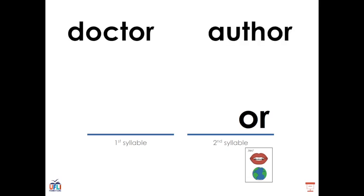We see another example of this with the word author. Again, it's a two-syllable word ending in the letters O-R, but instead of saying or, they're saying er.